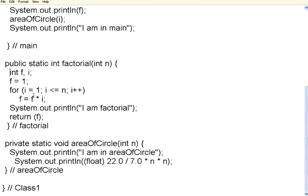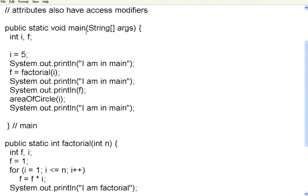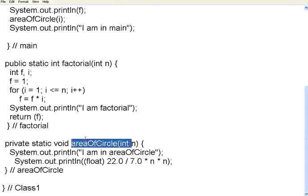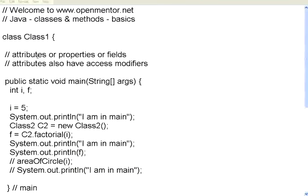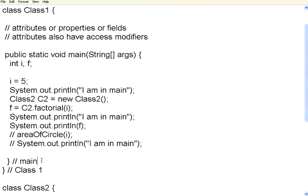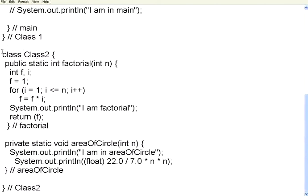Right now I showed you three methods — main, factorial, and area of circle — all in the same class. Now I am going to divide the same thing into two classes and show how you can call them. Class 1 has only one main method, and its braces are closed right there. I have declared class 2 as a separate class that consists of two methods — the same factorial and area of circle. Previously everything was in just one class; now I've divided them into two classes.